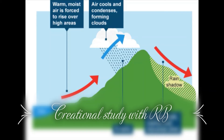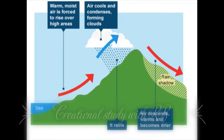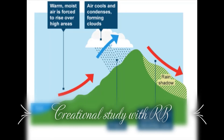The wind comes towards the land and the mountains. There is a physical feature in the form of mountains. The yellow arrow shows that the wind is warm and moist. The air is forced to rise over high areas. The blue arrow shows that as it rises it cools and condenses, and clouds begin to form.